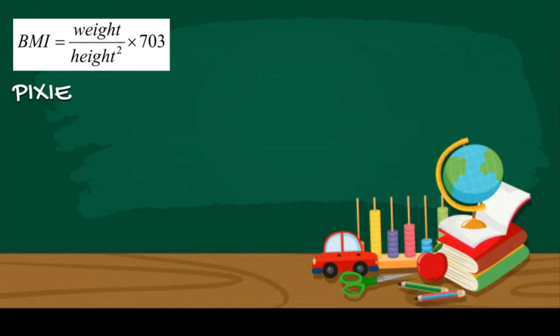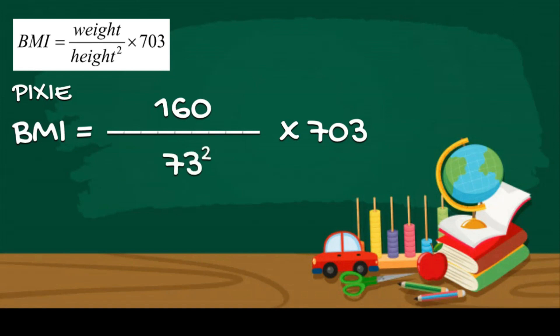Now we're going to put Pixie's data here. Pixie's weight is 160 pounds, so let's put it in the equation. Her height is 73 inches, and we'll put it in here.